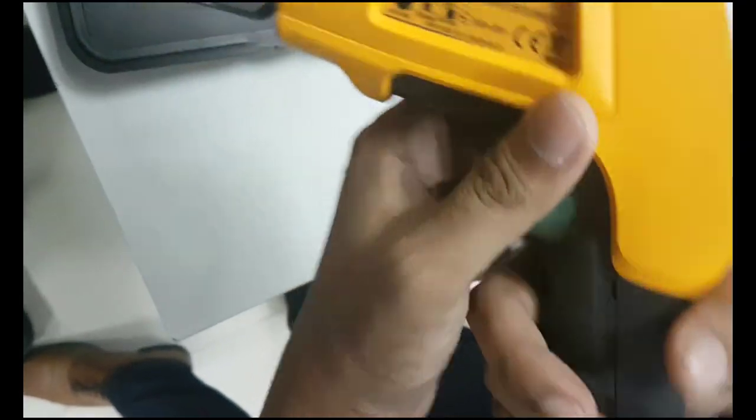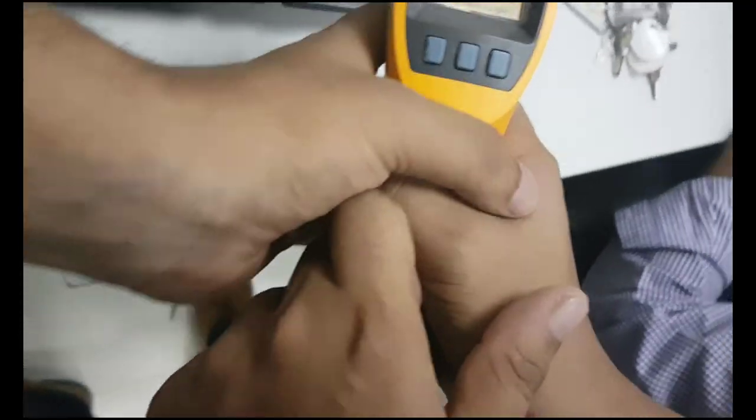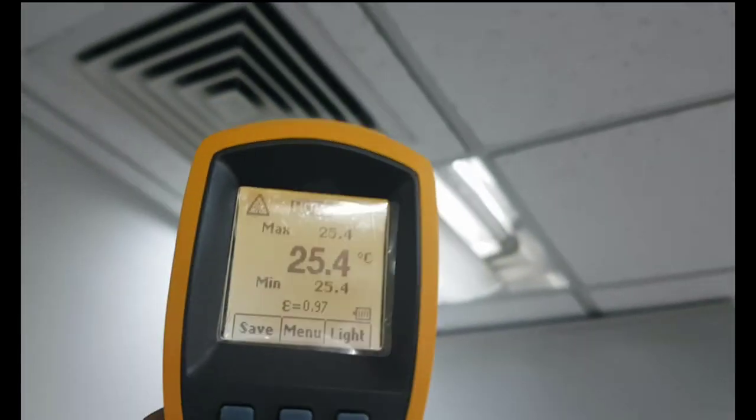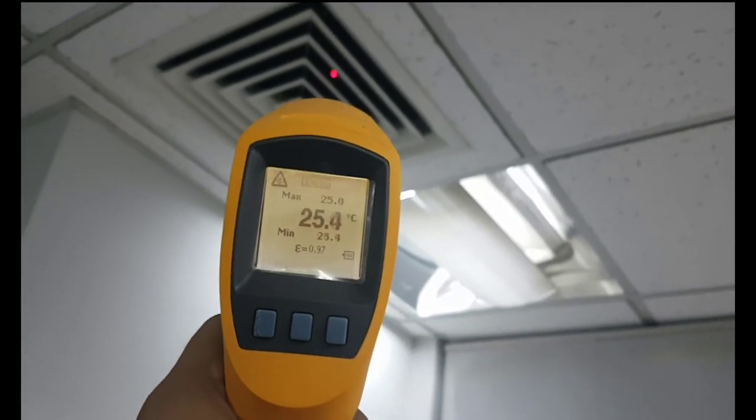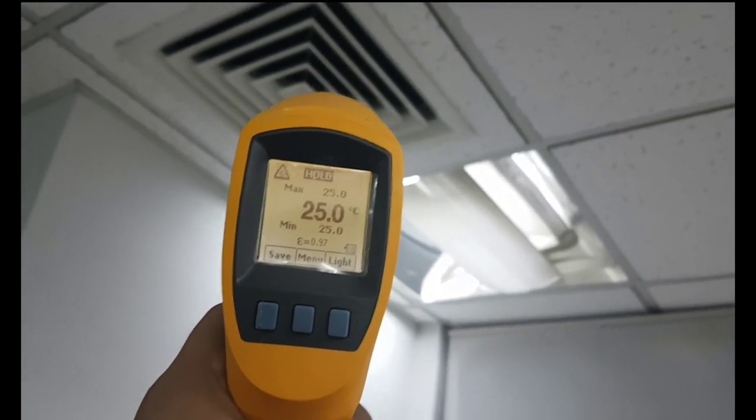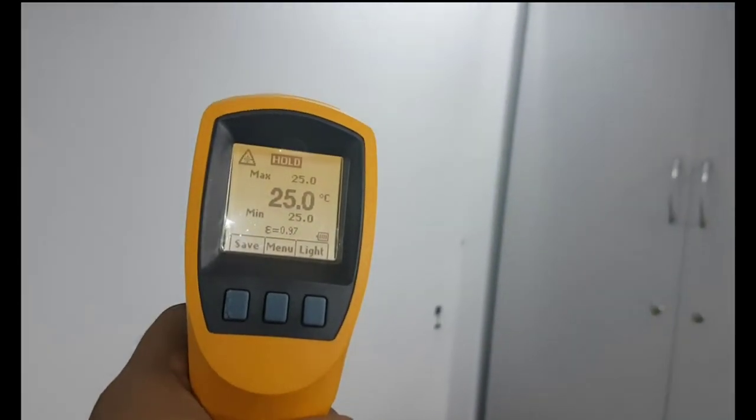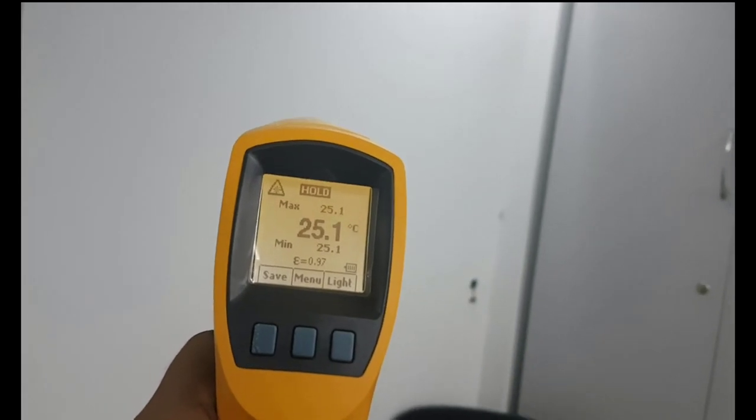Now we can turn it on and you can see that it's showing the temperature. I'm clicking the trigger and the IR is measuring the temperature. It's showing that this AC is 25 degrees Celsius.